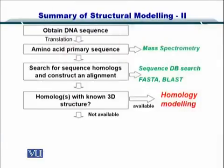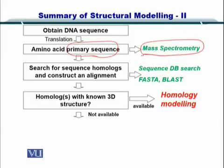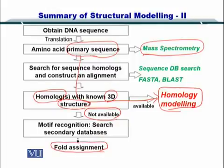In this module we will be reviewing fold recognition. In this slide you can see that if we had the primary sequence of proteins, obtained from either amino acid degradation or mass spectrometry, we could move towards homology modeling. However, if we had no homologs with 3D structures, we had to move to a different strategy called fold assignment. If you cannot find complete protein structures having similar sequences to your sequence, then you have to move to fold recognition.